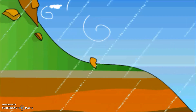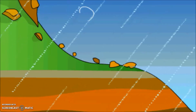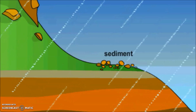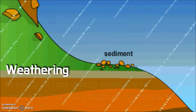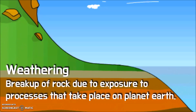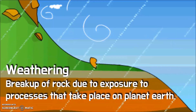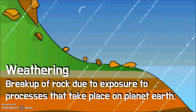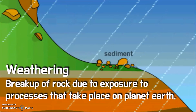Sedimentary rocks are made out of sediments, which are broken bits of rock. These bits form due to weathering, which is the breakup of rock due to exposure of different processes that take place on Earth. We're going to talk about those processes right now.